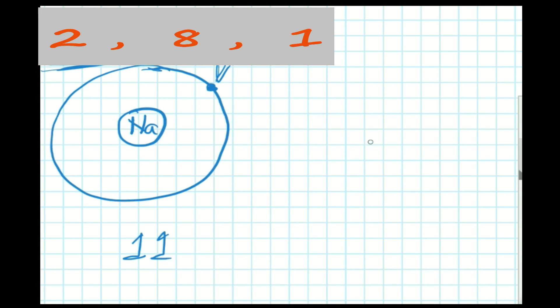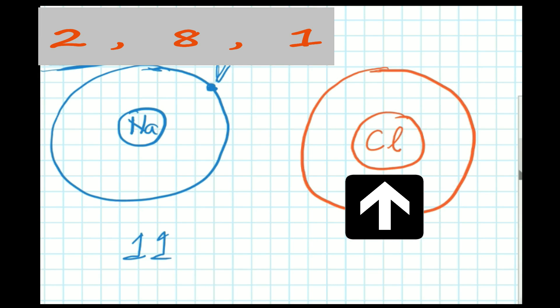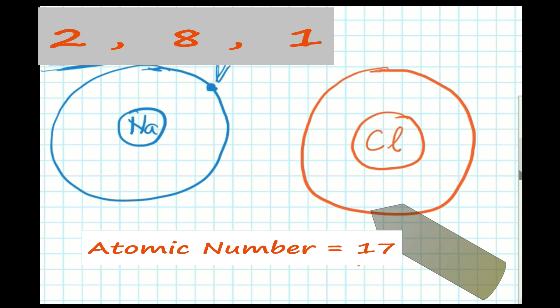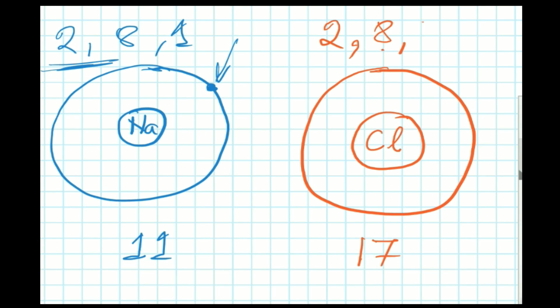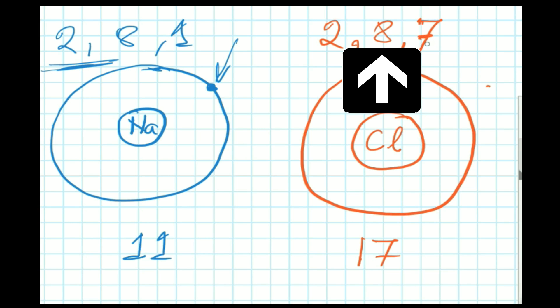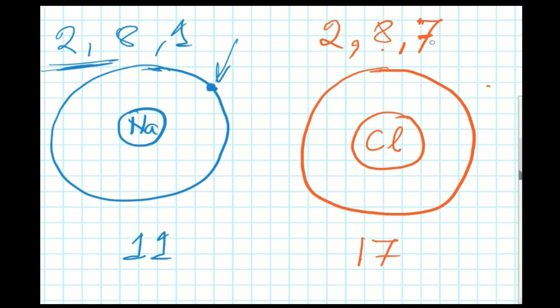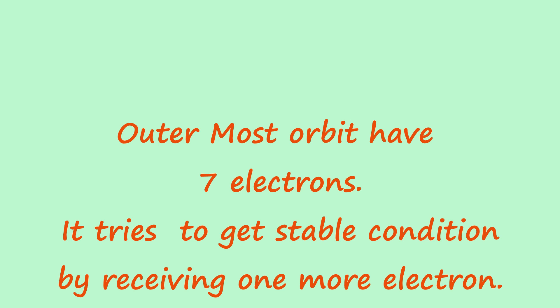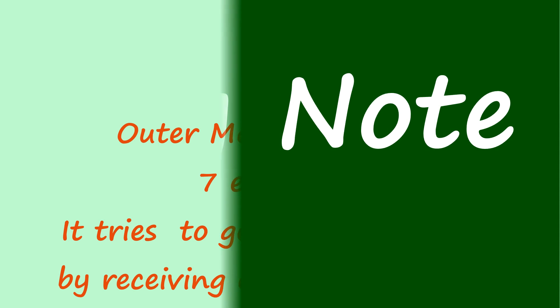This is the nucleus of chlorine and this is its outermost orbit. The atomic number of chlorine is 17, so the electron distribution in the orbits will be: 2 in the first orbit, 8 in the second orbit, and 7 in the outermost orbit — because the capacity of the outermost orbit is 8, and with 17 electrons total, the outermost orbit contains 7 electrons.